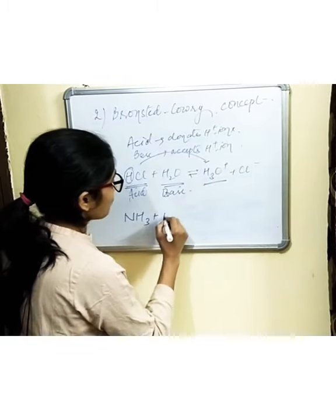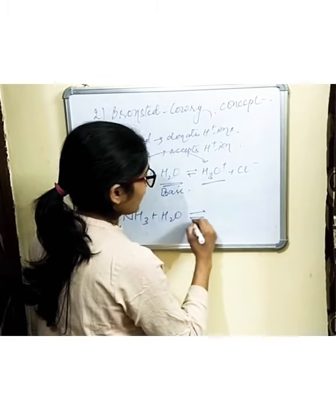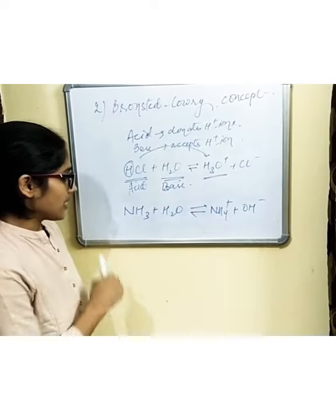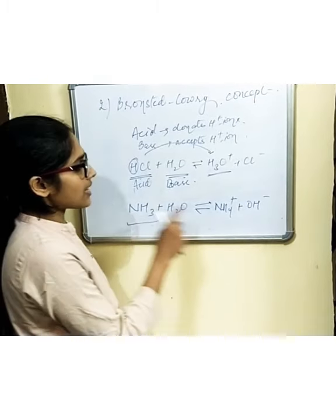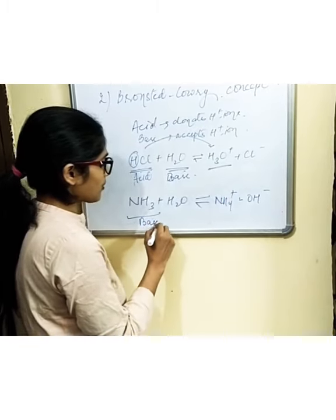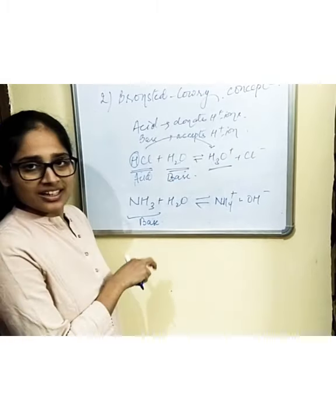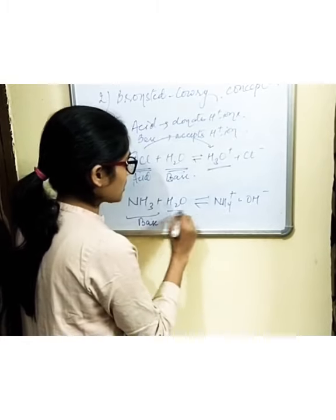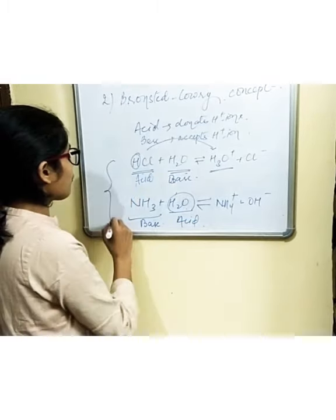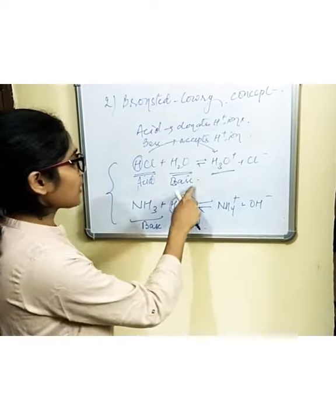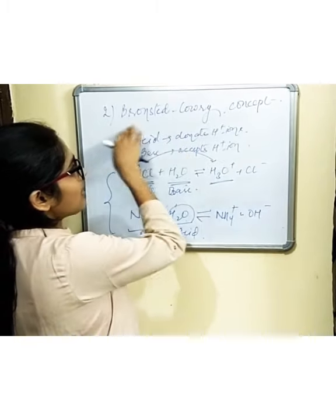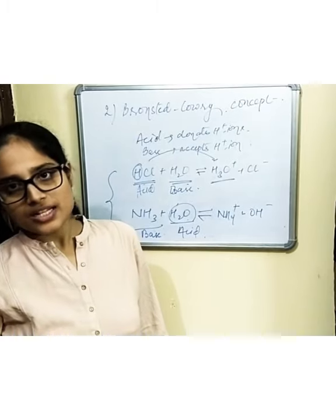As another example, when ammonia (NH3) combines with water, it forms NH4+ plus OH-. Here ammonia is accepting one H+ ion from the water molecule and forming ammonium ion, so ammonia is a base. Water here is acting as an acid because it is donating one H+ ion. From this we can conclude that water can act both as an acid as well as a base.